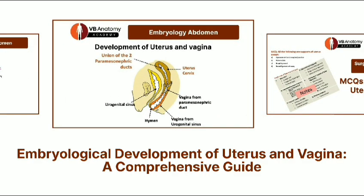Next, the development of the uterus and vagina. Understand what the mesonephric and paramesonephric ducts are, how the uterus and vagina develop from them, and what the remnants of these ducts are.